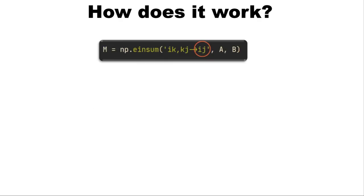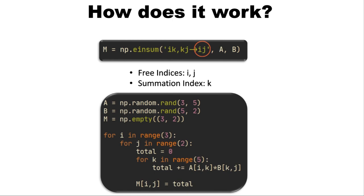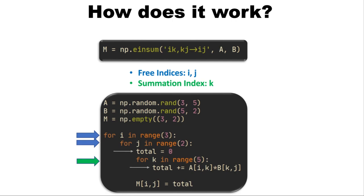Going back to our example, IJ here will be the free indices because they are specified in the output, and K will be a summation index. The free indices are associated with the outer loops — in this case I and J. The inner loop is where we're summing over the summation index, in this case K. After the outer loops, we first initialize a variable total, and then in the summation loop over index K we sum as we multiply the element-wise of A and B. After obtaining the sum, M[I][J] will be equal to this total.